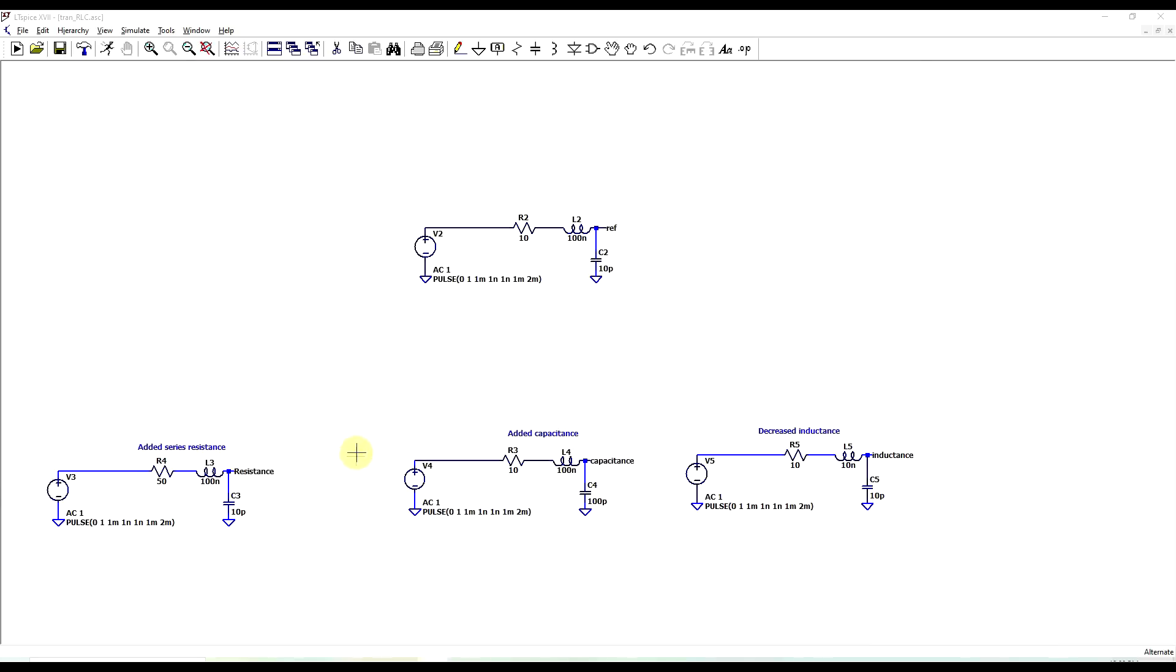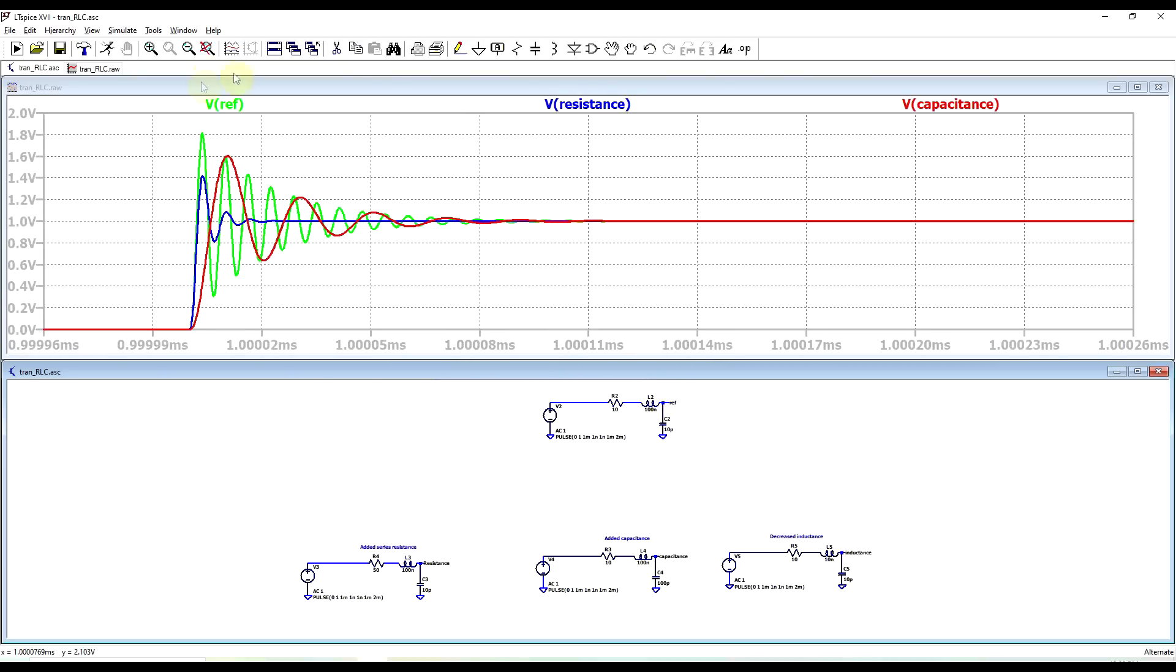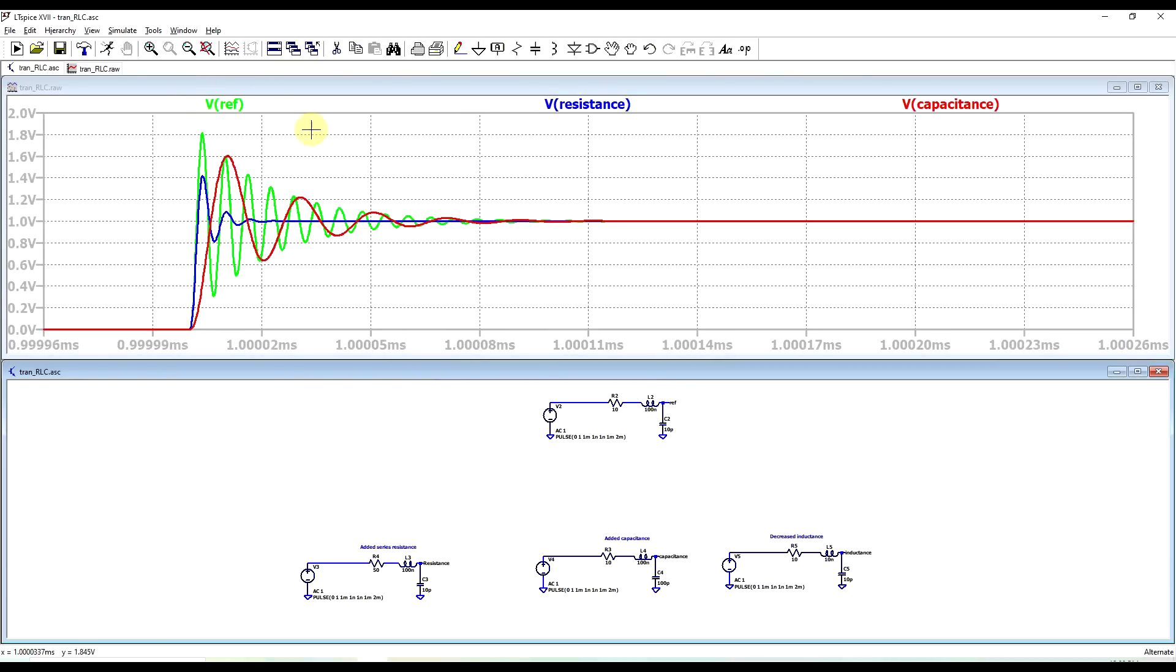First thing to look at is the damping factor. So this can be increased by increasing the resistance or the capacitance, or by decreasing the inductance. So if we run these circuits and compare them a bit, so if we take the reference signal in green, compare it to the response of the circuit with increased resistance and the one with increased capacitance.